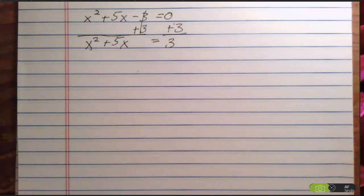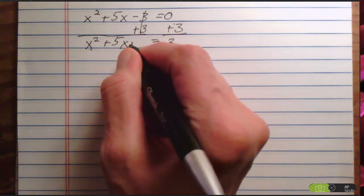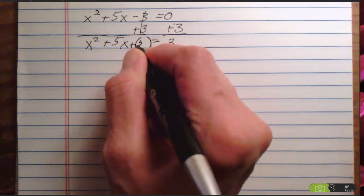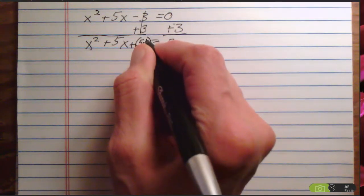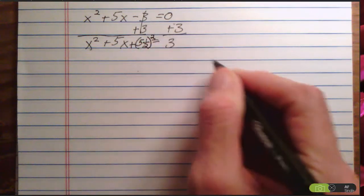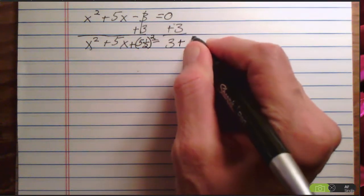Now I am ready to complete the square. My b number is 5. I multiply it by 1/2 and square it. Same thing over here.